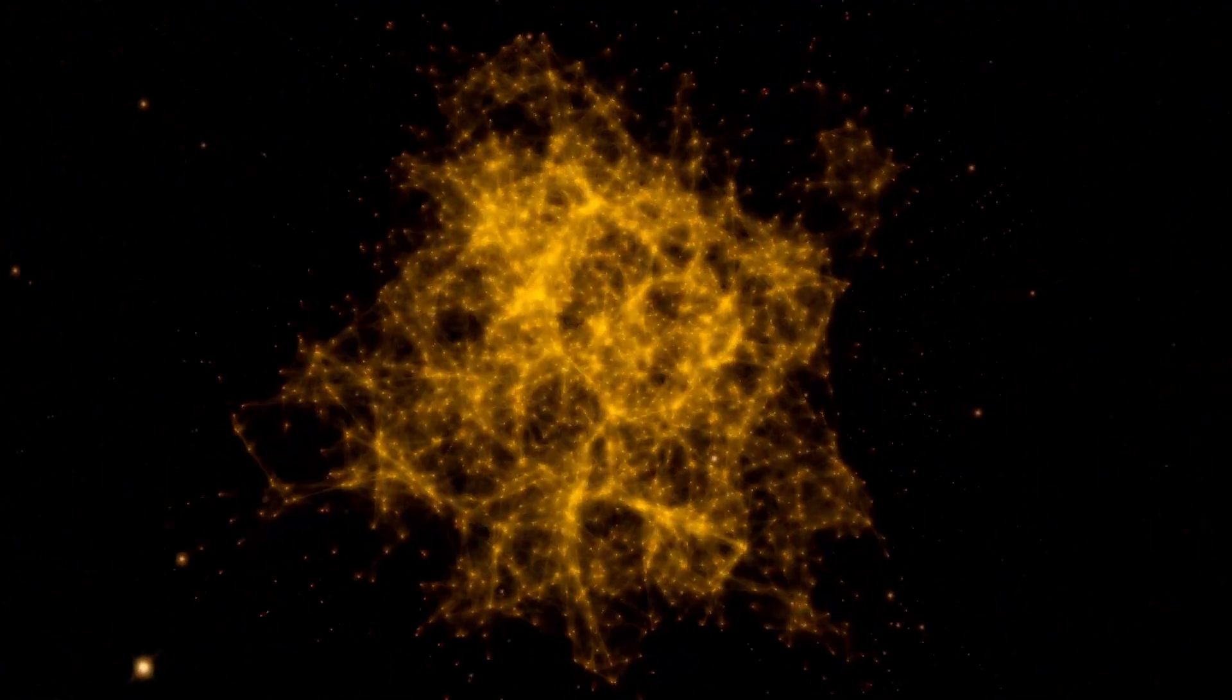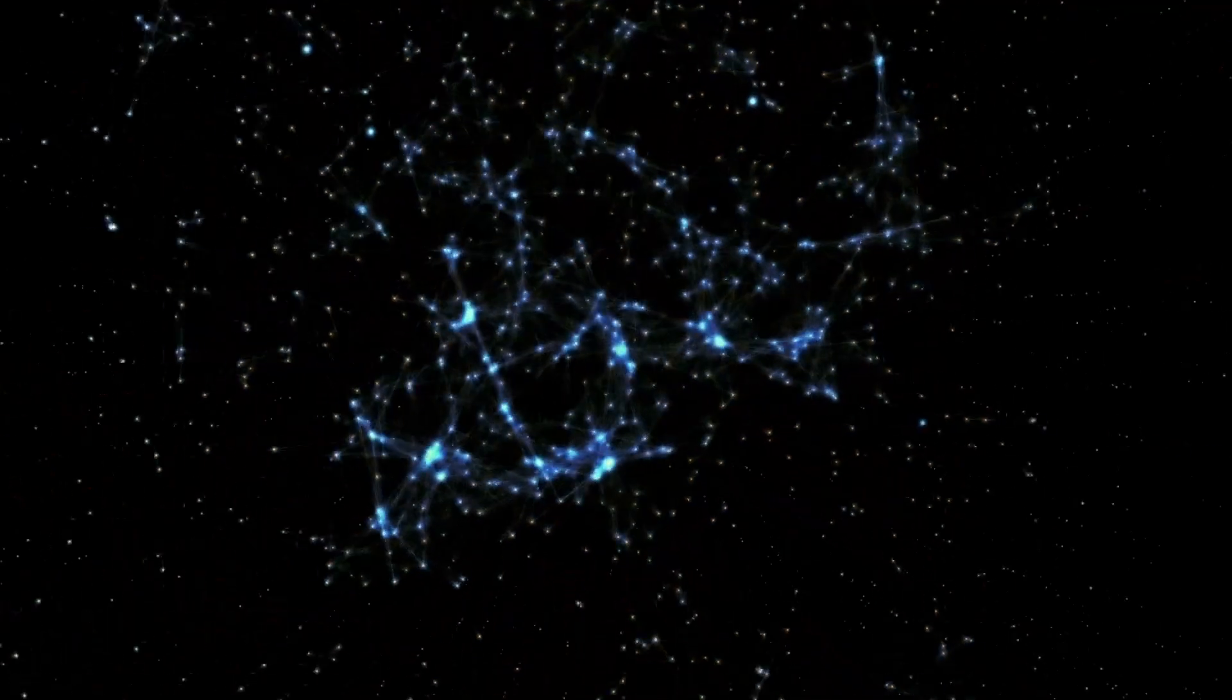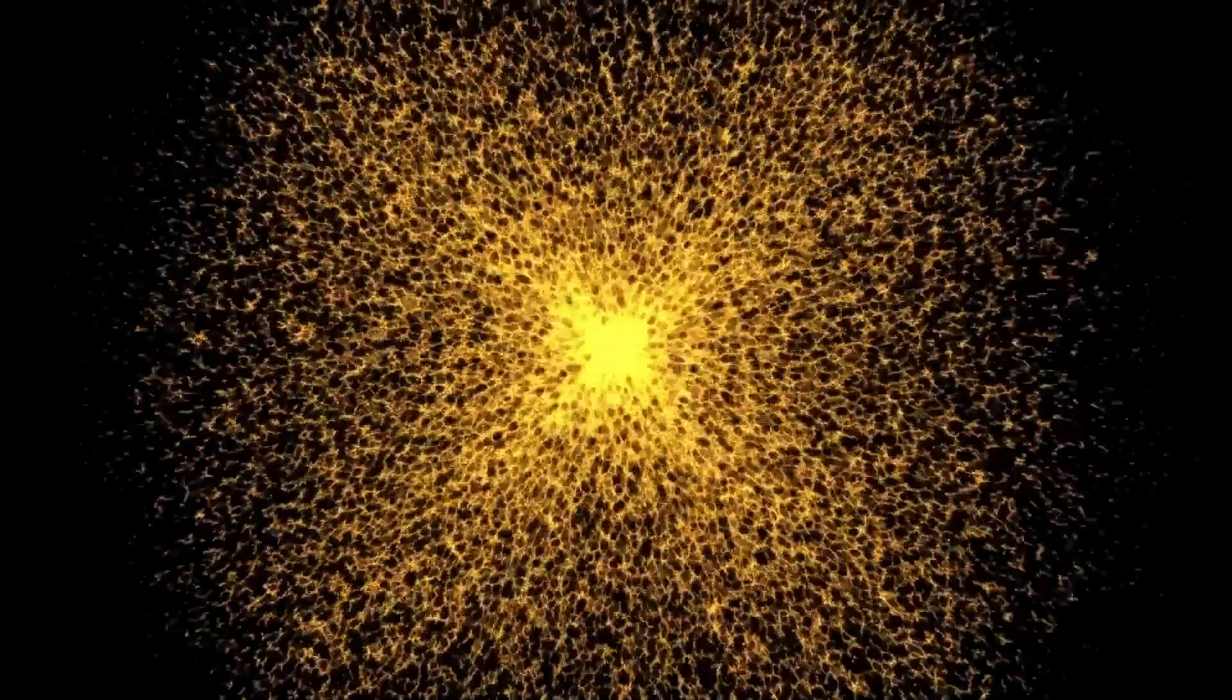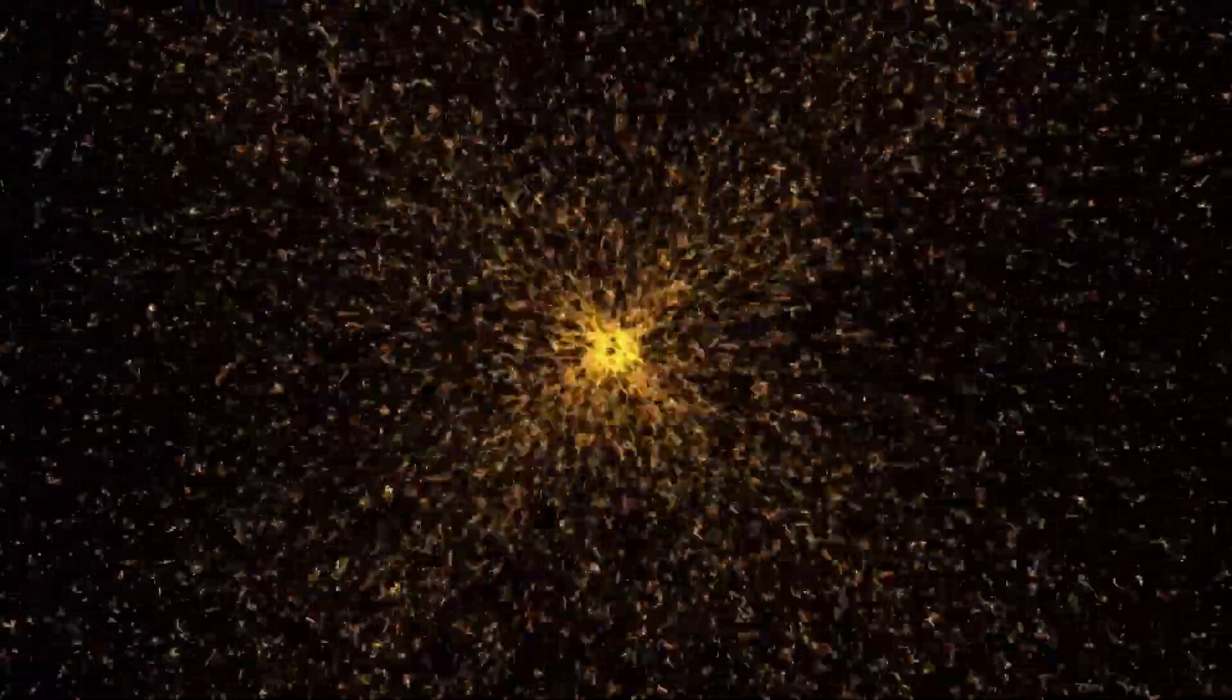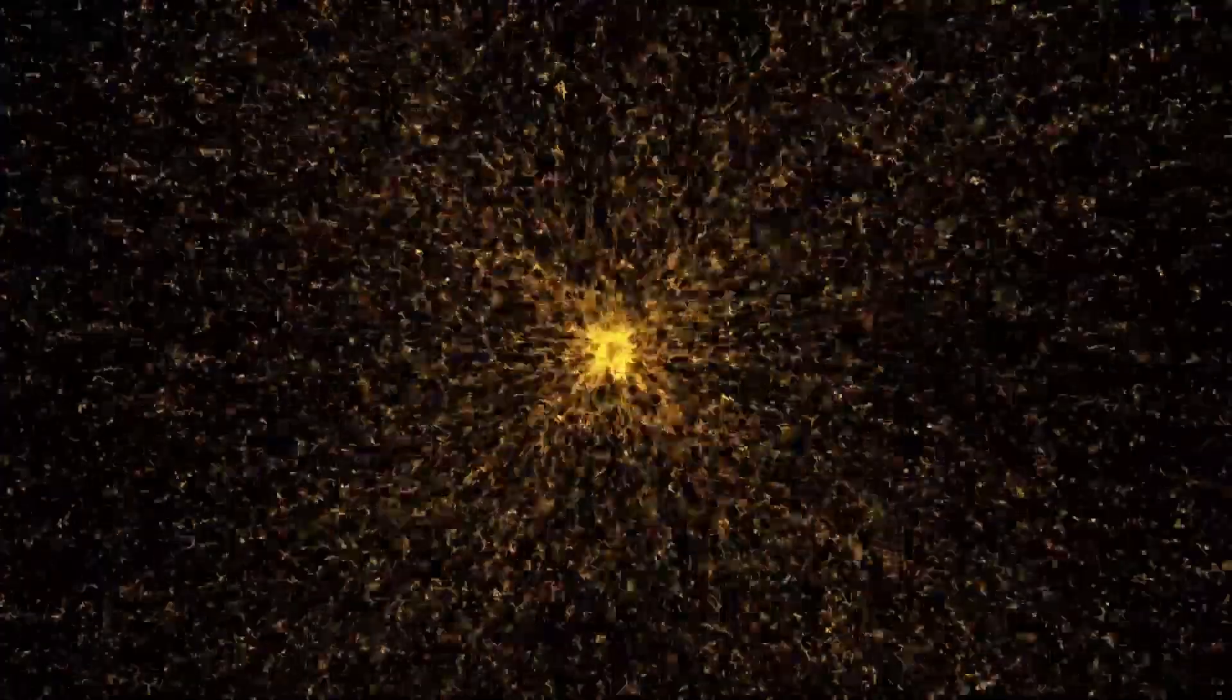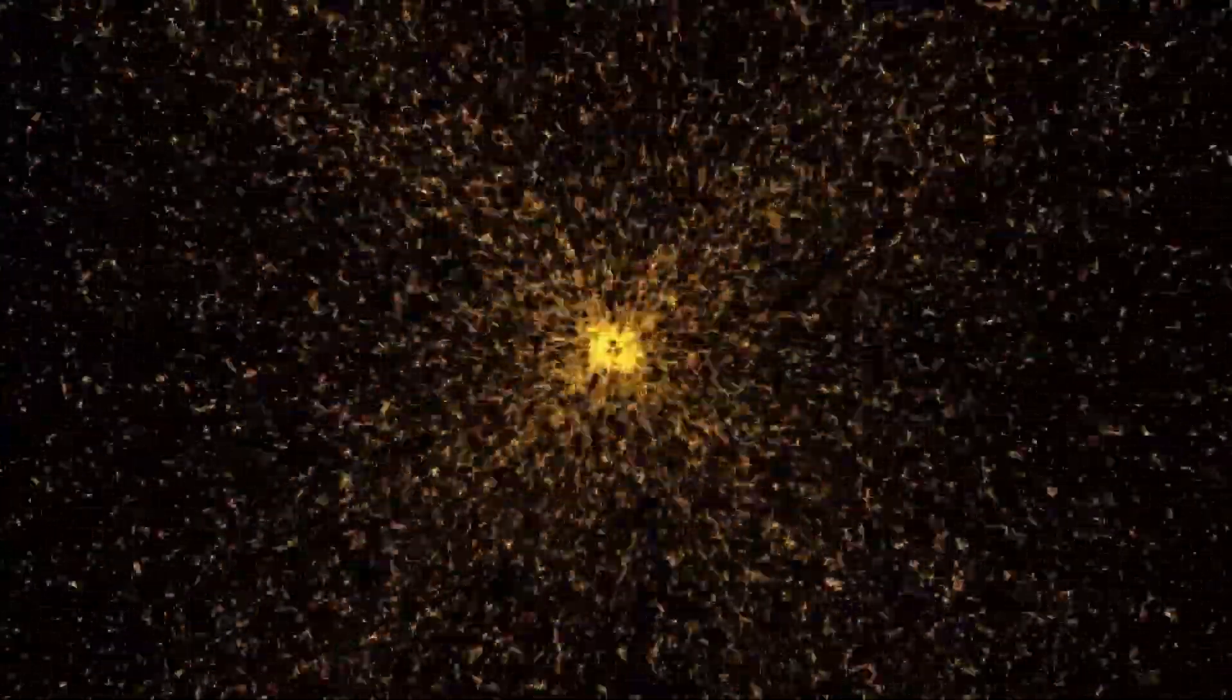This dust formed when a giant convective bubble within the star surfaced, cooled, and ejected plasma into space, which then condensed into dust that temporarily blocked some of the light reaching Earth. While Betelgeuse returned to normal brightness afterward, the episode underscored the unpredictable and complex forces operating within red supergiants.